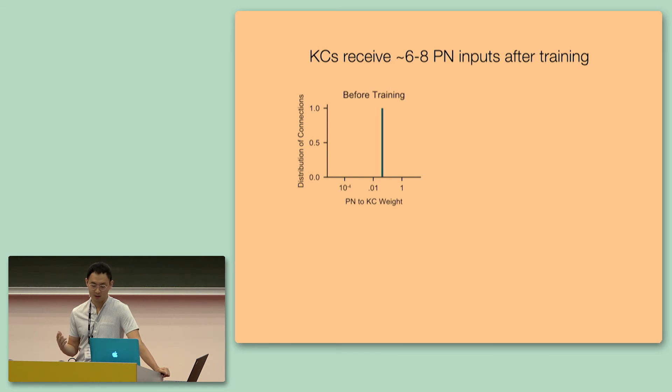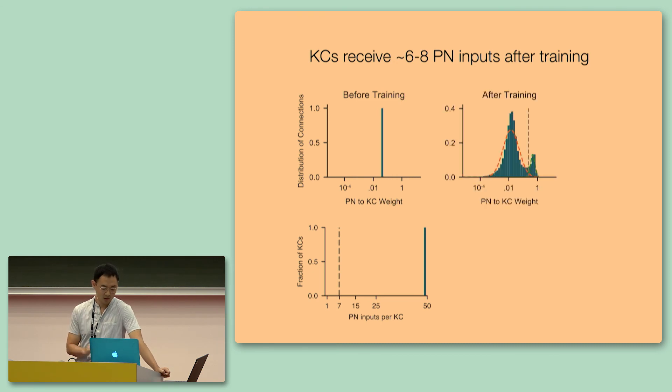And to analyze this a little bit more in detail, we first look at the connectivity before training. We've simply initialized it such that every single Kenyan cell receives all 50 inputs from PNs with the same weight. However, after training, we observed that these connections segregate into two distinct modes, in which there is a set of weak connections and a set of strong connections. We can simply threshold these connections after fitting to a mixture of Gaussians, and then find that indeed every single Kenyan cell appears to receive seven projection neuron inputs that are strong on average, recapitulating exactly what we observe in the biological system.